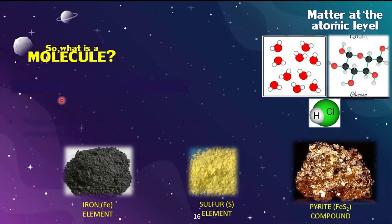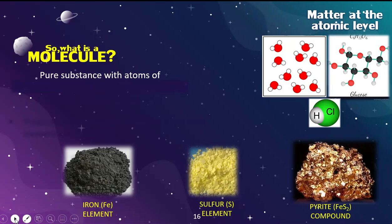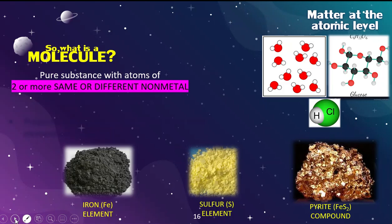Now let's think about molecules. A molecule is a term you may hear often, and it's important to understand the distinction between an element, a molecule, and a compound. Molecules are also considered pure substances, and their atoms can be the same or different. Unlike a compound, which must have two or more different elements, molecules can have the same elements. The key is that there must be two or more atoms present — you can't have a monatomic molecule.